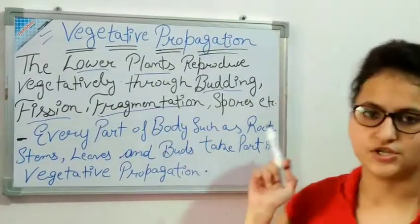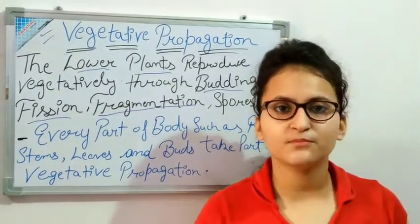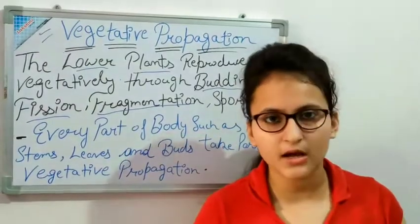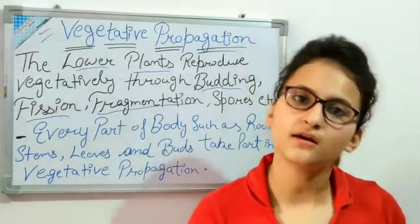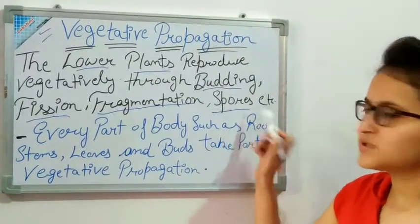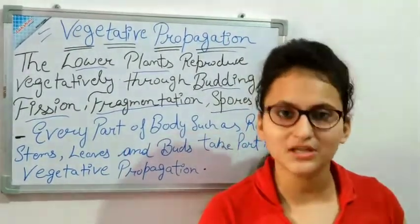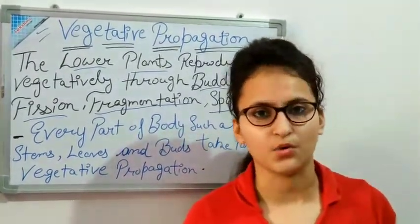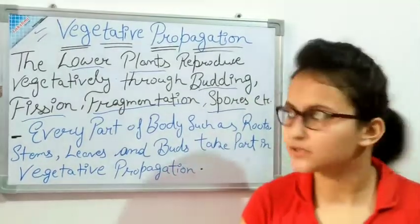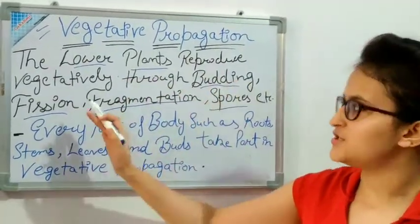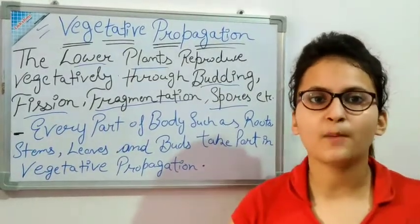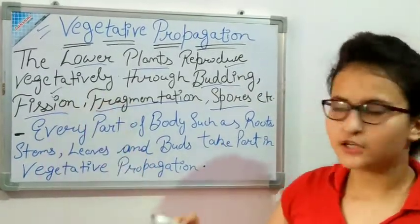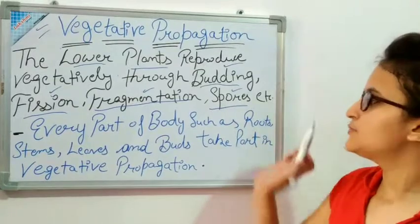Next is fragmentation — fragmentation means that a new plant is produced. Next is spores. Spores act as seeds; when we have a spore, a new plant grows. The lower plants are reproduced through budding, fission, fragmentation, and spores.